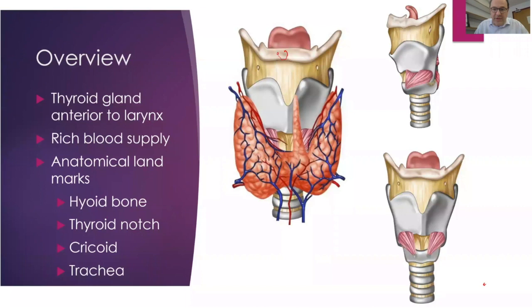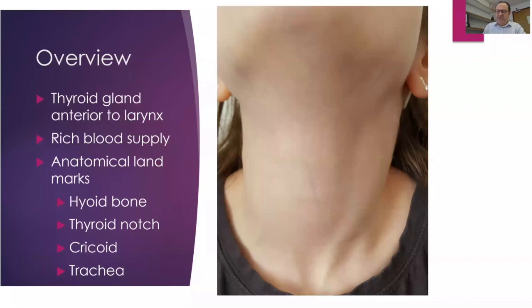You will have the hyoid bone, thyrohyoid membrane, thyroid notch and thyroid laminae, the cricothyroid membrane, and the cricoid cartilage, which can be hidden behind the thyroid isthmus. Palpability varies a lot depending on the patient — it's much easier in a thin male neck with a prominent thyroid cartilage, but in females or obese patients with a large amount of fat in the neck, it becomes a lot more difficult. In a male you can most often palpate the thyroid notch and take it from there.